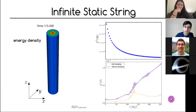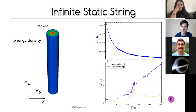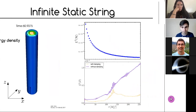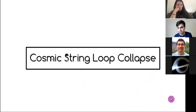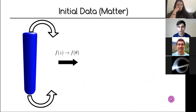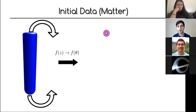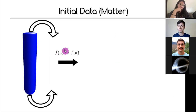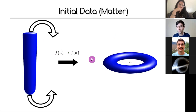Even though the infinite static string is boring, we use it to test our code. Once validated, we can study the more interesting phenomenon of cosmic string loop collapse. To construct a circular loop, we take the infinite string solution and identify the periodicity in z with a periodicity in θ — essentially taking the string, cutting it, and stitching it together — to get a circular loop.